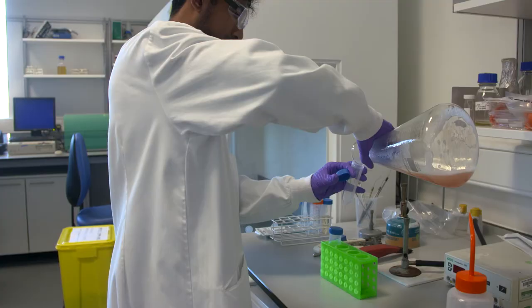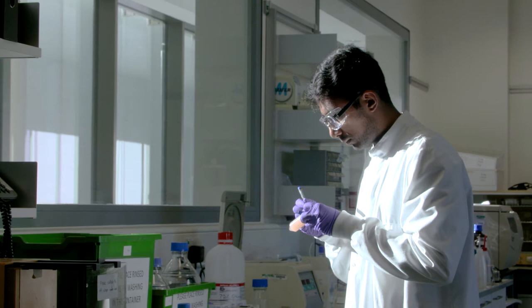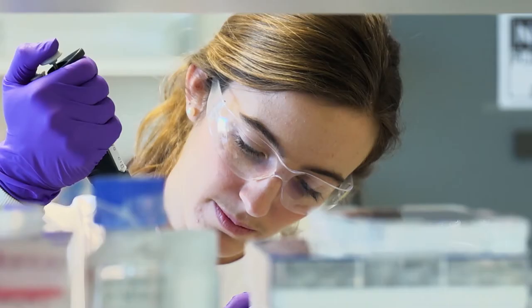Once the culture has turned pink we break open the cells and take the lysate. Then we take that lysate and we mix it with some silica and at the end we have now a clear solution with pink silica at the bottom.